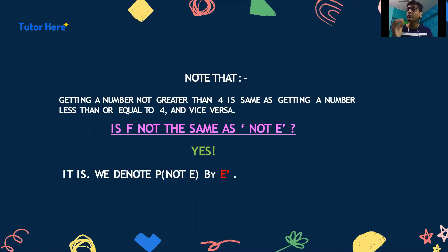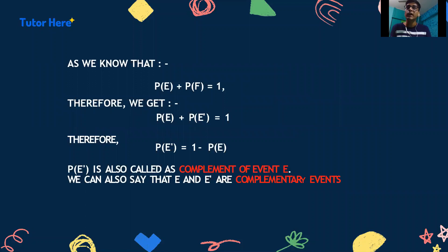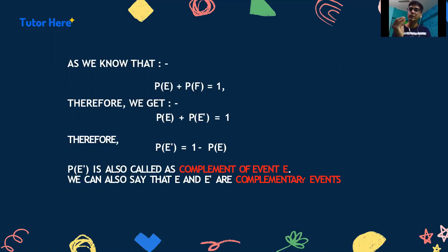So is F the same as not E? Yes, it is. We denote not E by E-bar. Not E means all the outcomes which are not in the set of E. As we know that P(E) plus P(F) equals 1, as seen in the previous video, we can replace F by E-bar. So the equation becomes P(E) plus P(E-bar) equals 1, and therefore P(E-bar) equals 1 minus P(E). P(E-bar) is also called the complement of event E. We can also say that E and E-bar are complementary events.